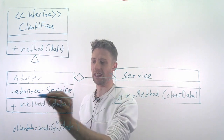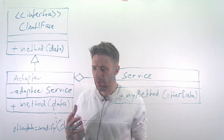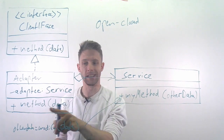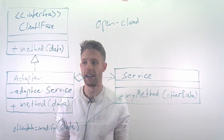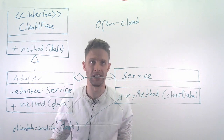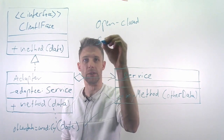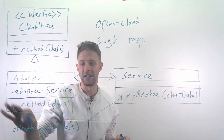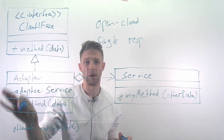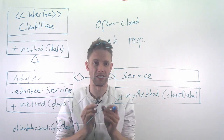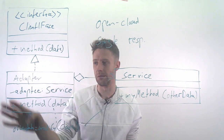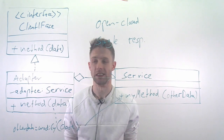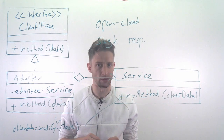You convert the data and then call the service method with the converted data. The adaptation process happens in the concrete implementation of this method. This follows the open/closed principle — we are not modifying our service, we are simply extending it with additional functionality, in this case just a conversion. We also have the single responsibility principle: we don't modify the service itself, but instead delegate the interface adaptation to a special adapter that does only this one thing.